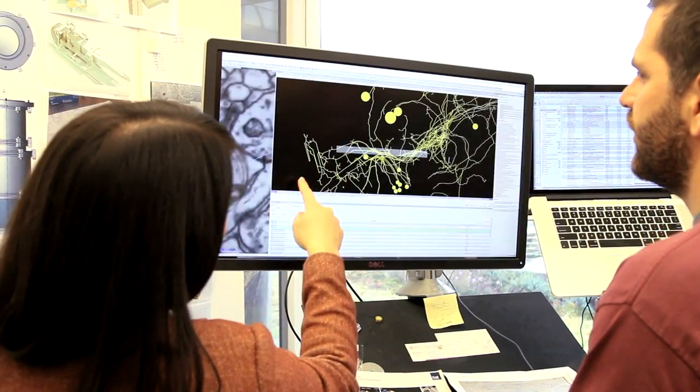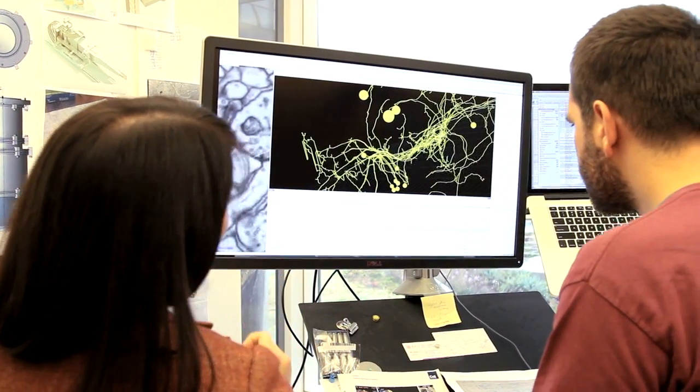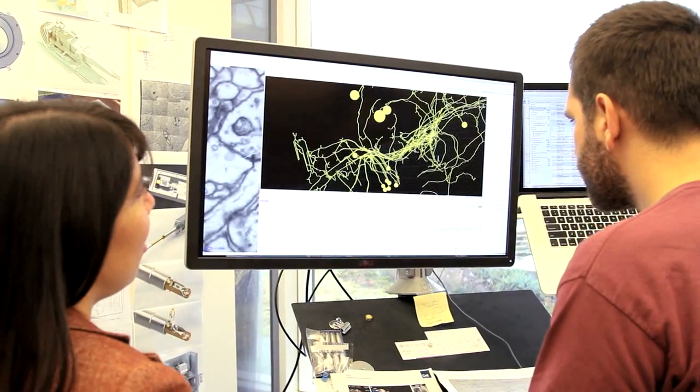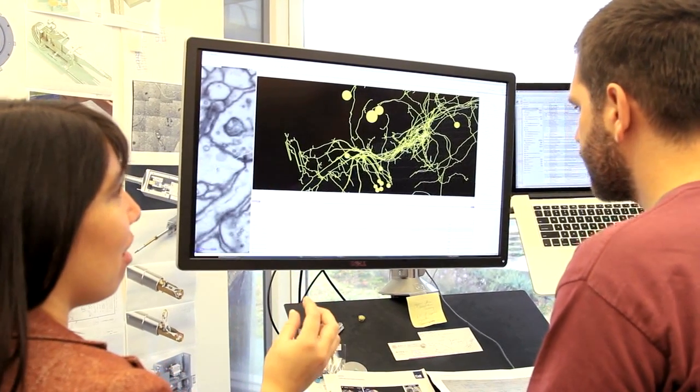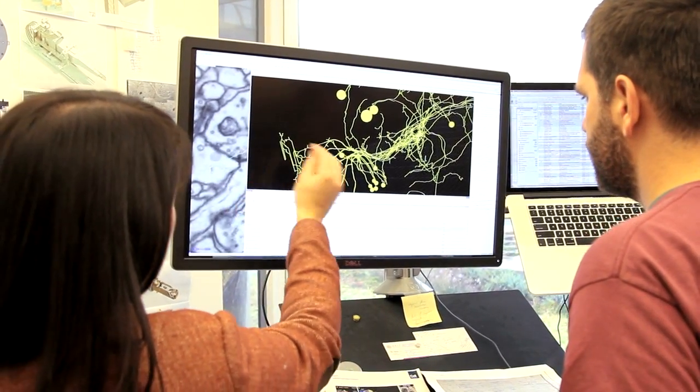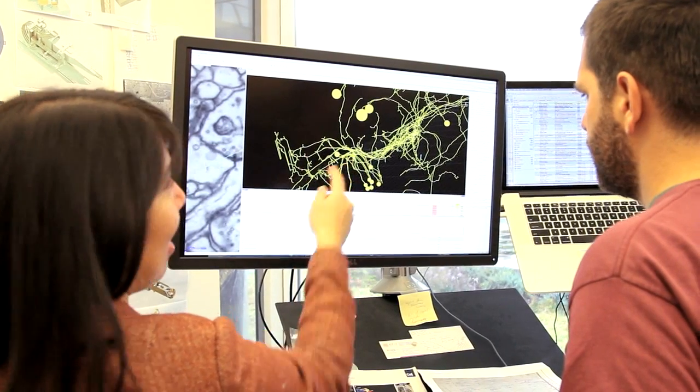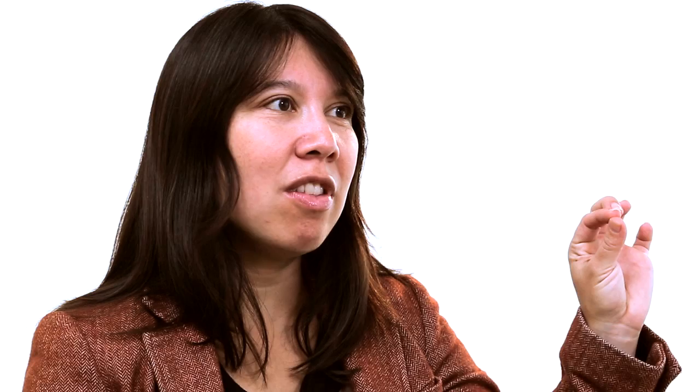It was interesting showing the data to Davi because I had actually observed something that he hadn't seen before. So I noticed when I was tracing these neurons that for those particular visual input neurons, the cell body tether seems to travel along the same path as the axon. We noticed that the neurite that connects the cell body to the neuron actually abuts the axon in a way such that they travel together.